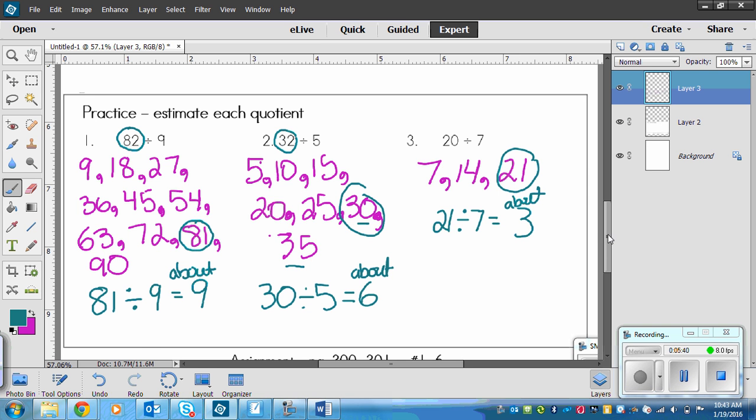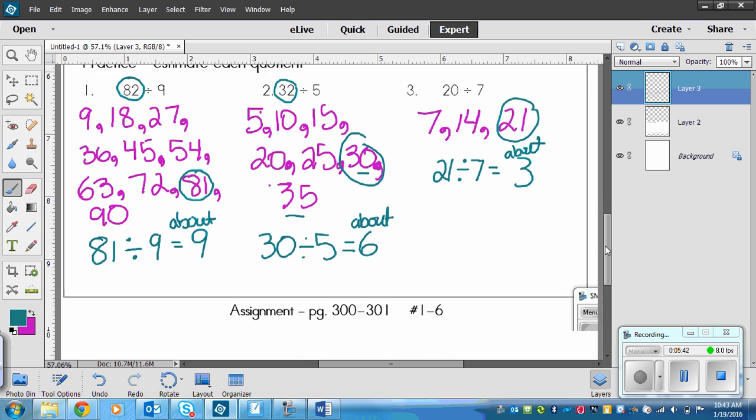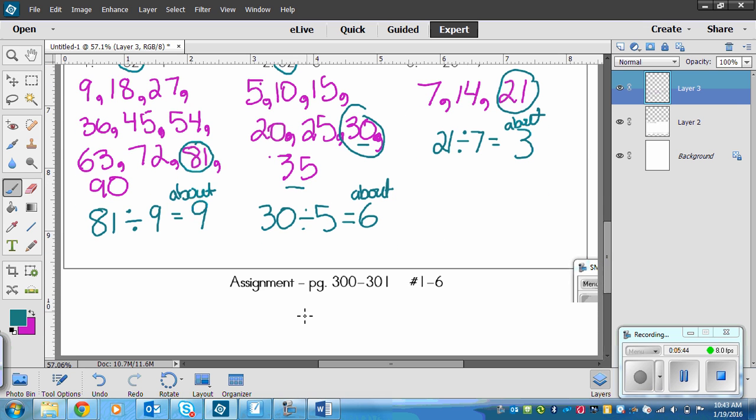Alright, so pretty straightforward. Only one way to do it. So your assignment is page 300 to 301, number 1 to 6.